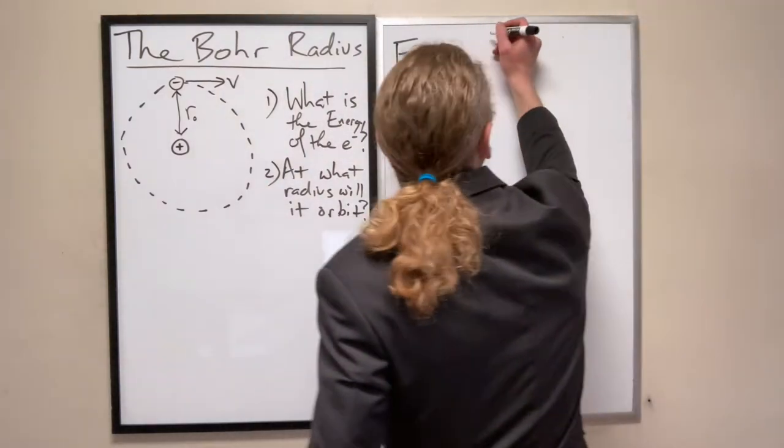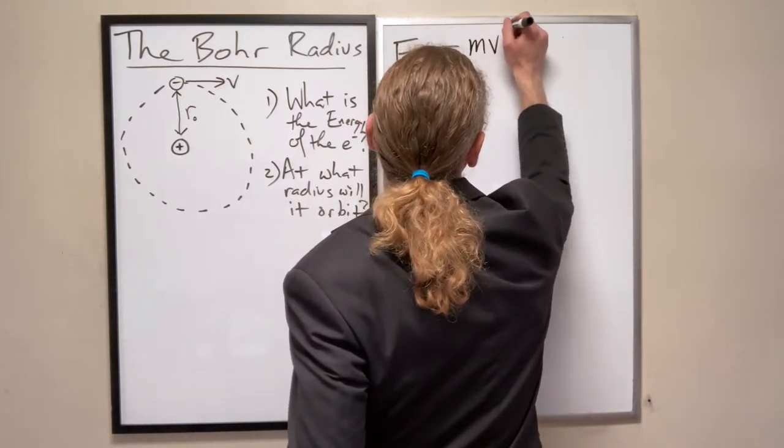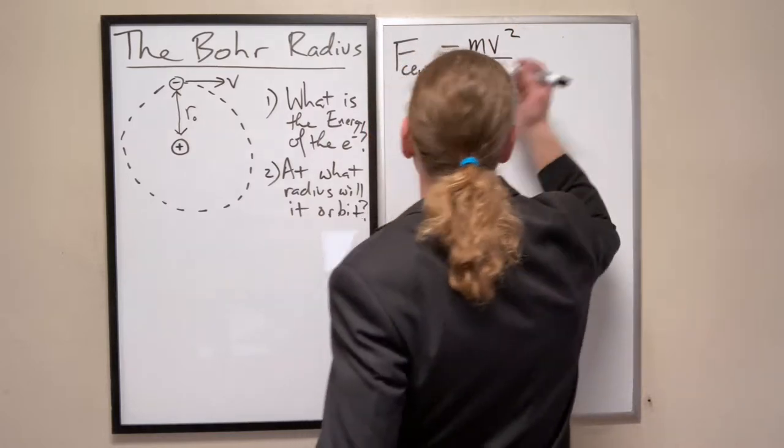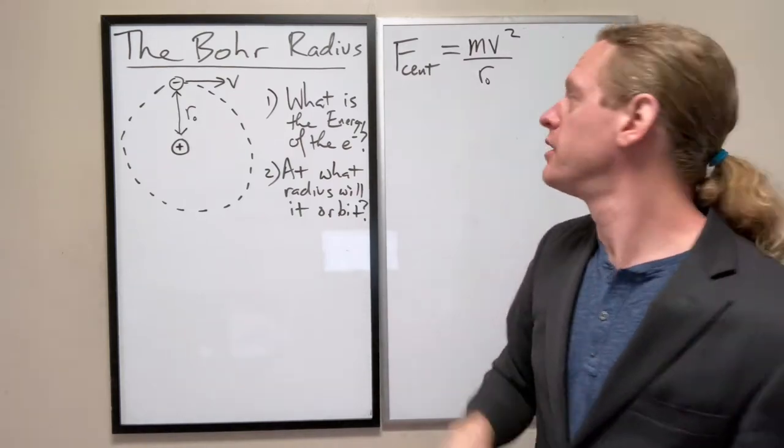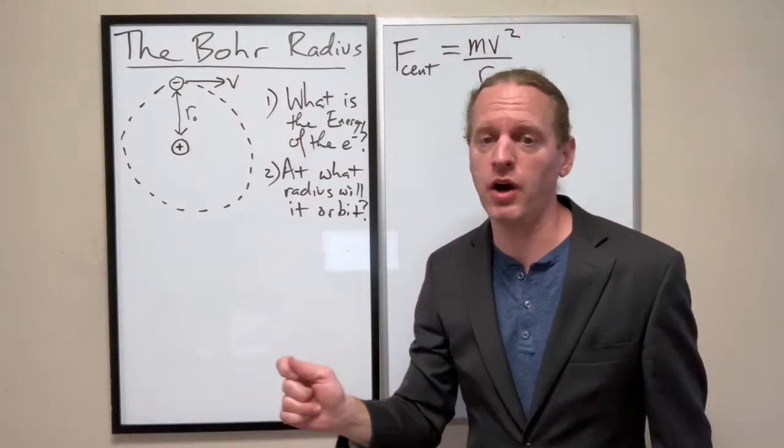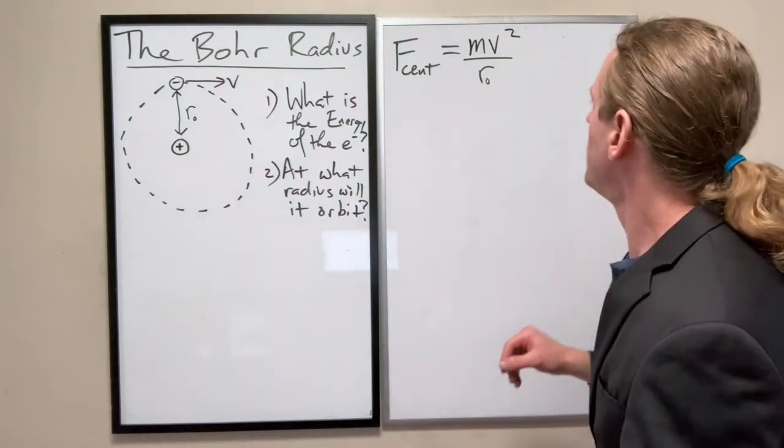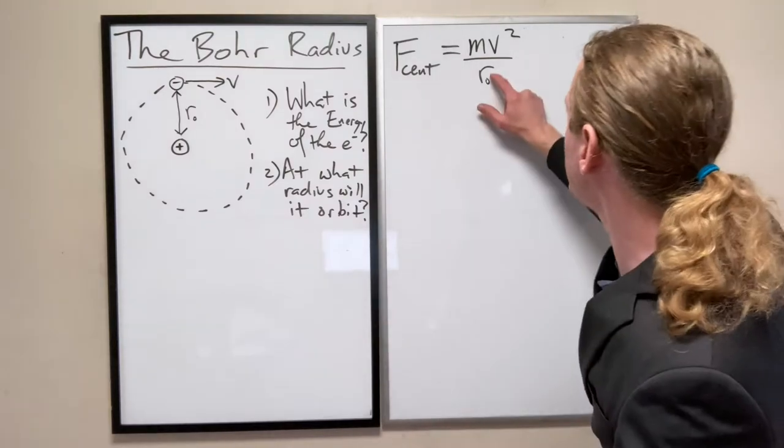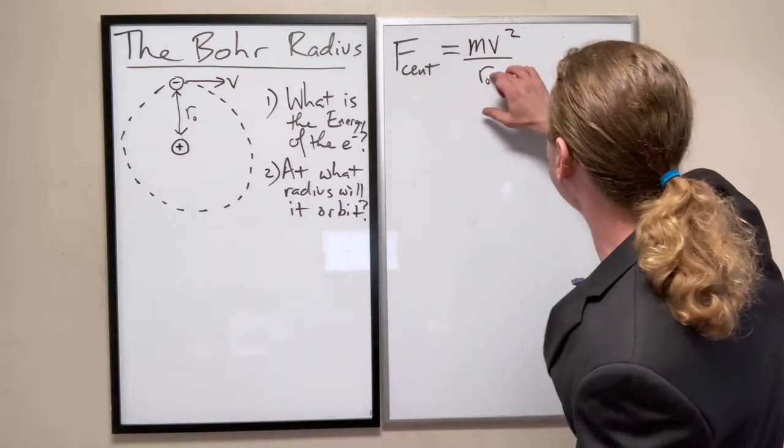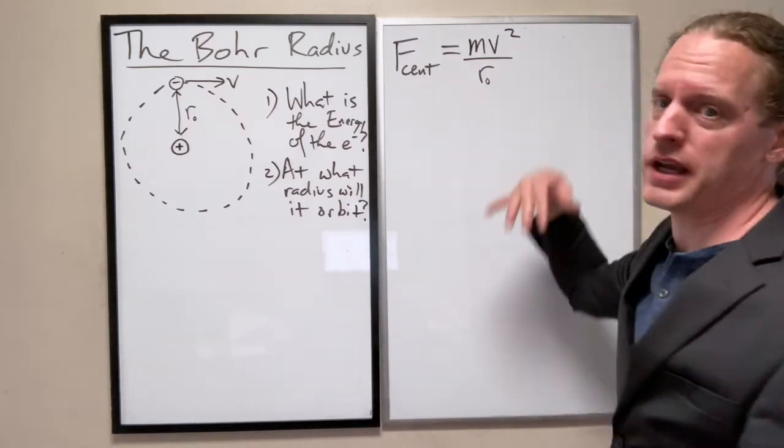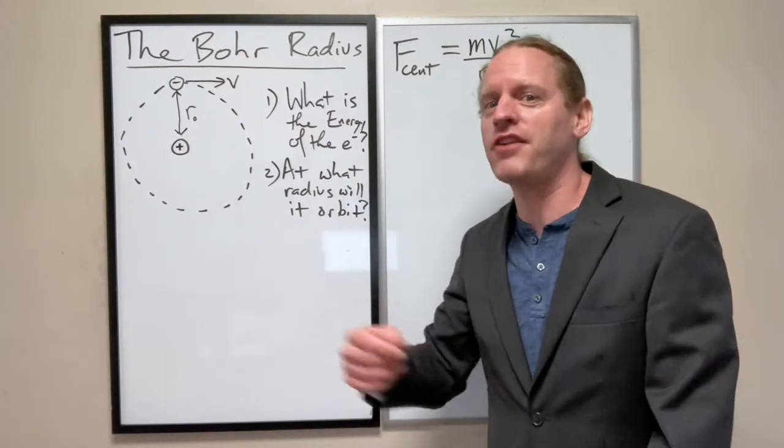The centripetal force for any sort of circular motion system is written as mv squared over r, and in this case I'm going to write r-naught. To be entirely clear, this v is not something that we know, and it's not something we will be able to calculate from first principles.